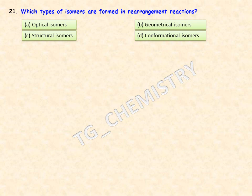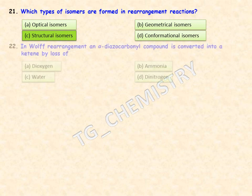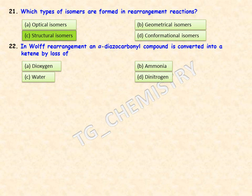Which types of isomers are formed in rearrangement reactions? In rearrangement reactions, what actually happens is a change in molecular structure, where one structural isomer is converted to another. So structural isomers are formed during rearrangement reactions.